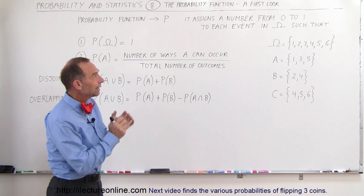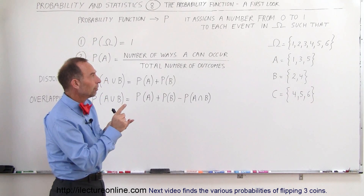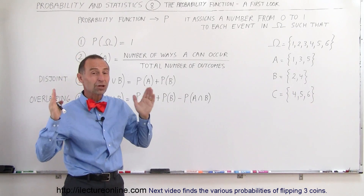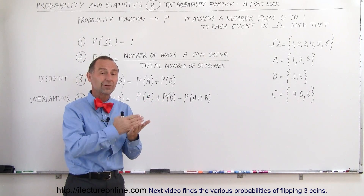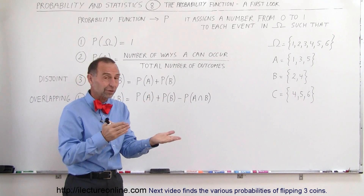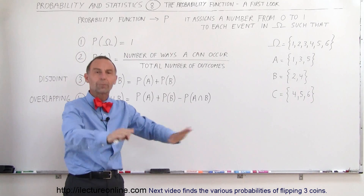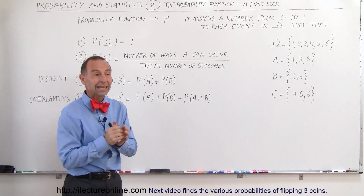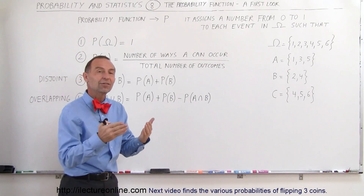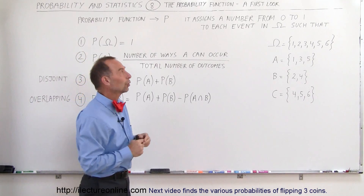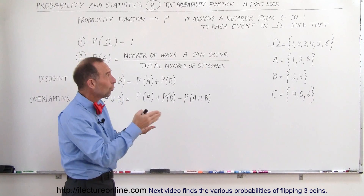The definition of the probability function is that it assigns a number from 0 to 1. The only number you can have is something between 0 and 1 — it could be 0 or it could be 1. If it's 0, it means there's 0 probability that the event can occur. If it's 1, there's a 100% probability that the event will occur. That's why you assign a number to the event from 0 to 1.